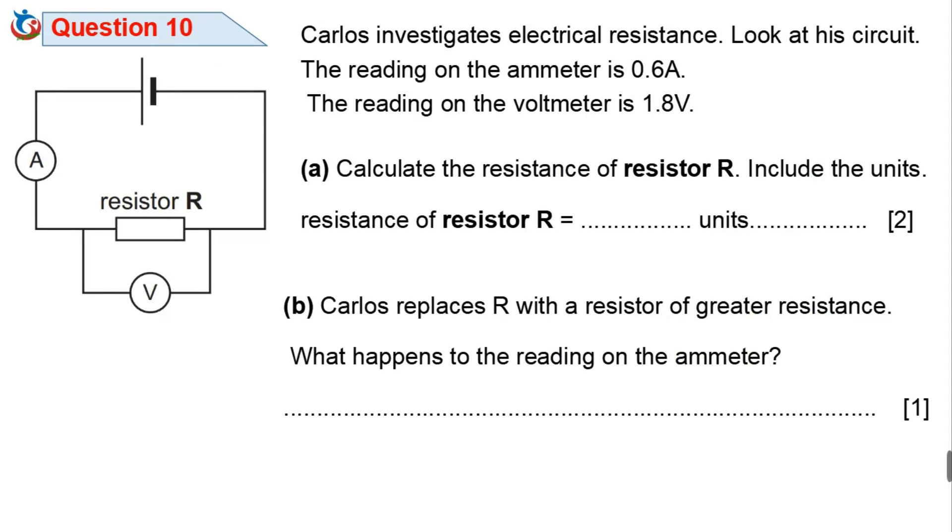Question 10. Carlos investigates electrical resistance. Look at the circuit. The reading on the ammeter is 0.6 amps. The reading on the voltmeter is 1.8 volts. Question 10a. Calculate the resistance of resistor R. Include the units. Resistance of resistor R is equal to dash, and the unit is dash.